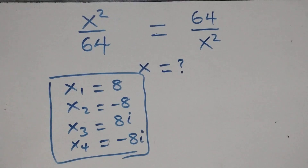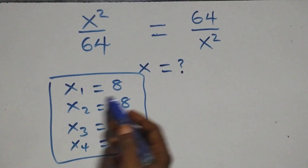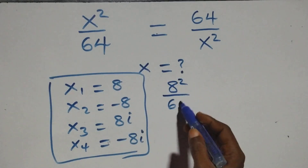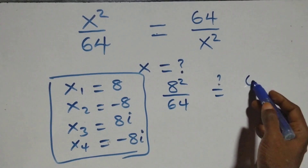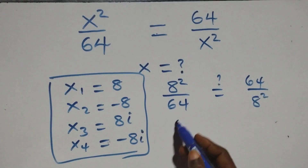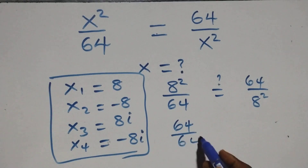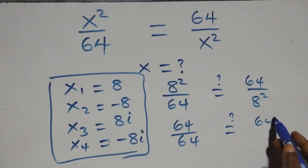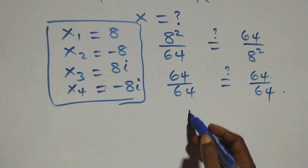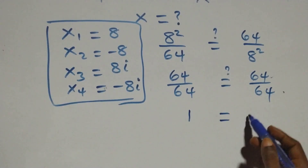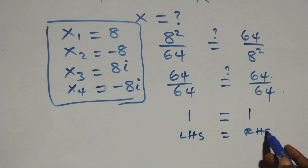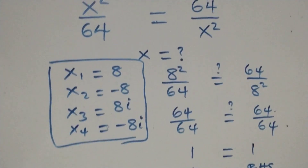Substituting x = 8: we get 8² over 64, which is 64 over 64 = 1, and the right-hand side is 64 over 8², also 64 over 64 = 1. Left-hand side equals right-hand side, so x = 8 satisfies the given problem.